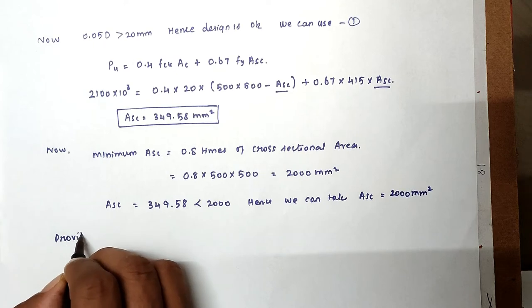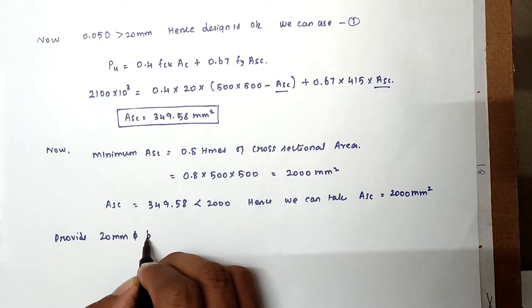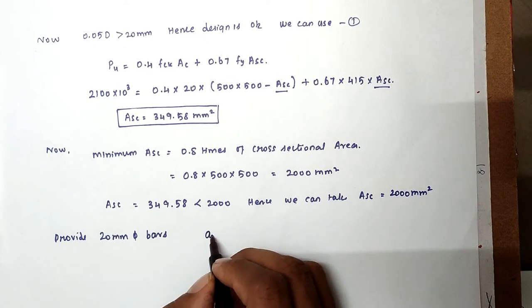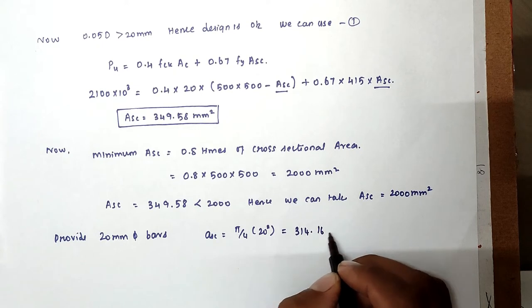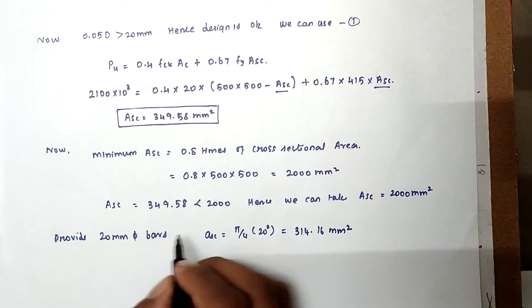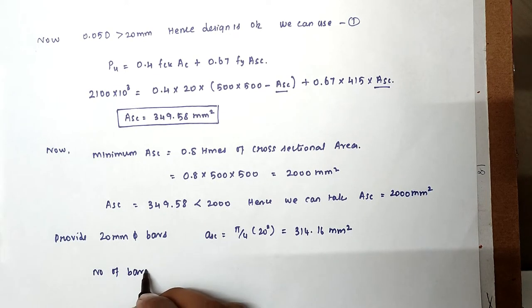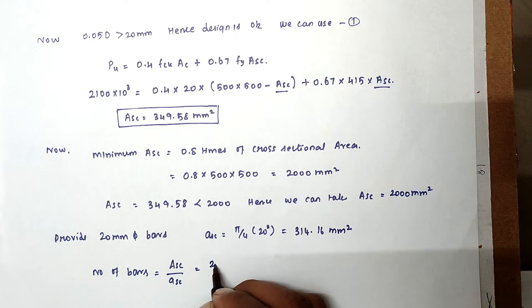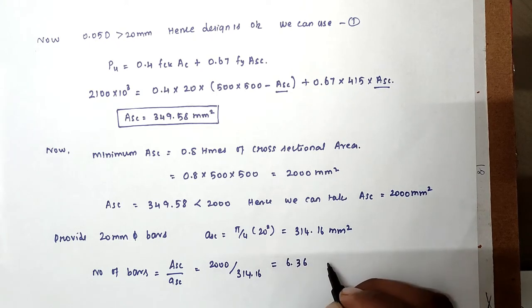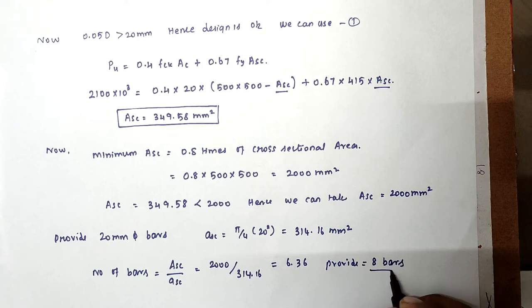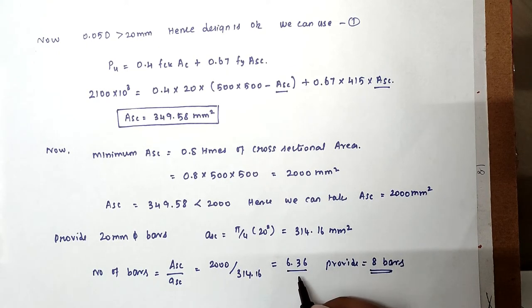Now provide 20mm diameter bars. So now ASC equal to pi by 4 into d square equal to 314.16 mm square. So number of bars equal to 2000 divided by 314.16, equal to 6.36. So provide 8 bars. Why we provide 8 bars? Because there is roundoff of 6.36, so 7 will come. So we can provide 8 bars.